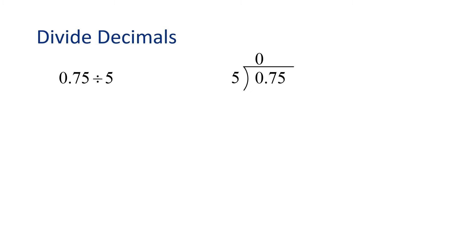Now we want to determine, how many times does 5 go into 7 without going over? That would be 1 time. We write that below the 7.